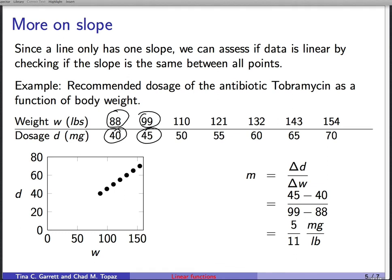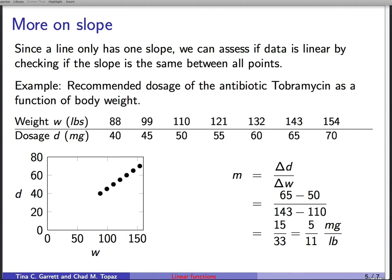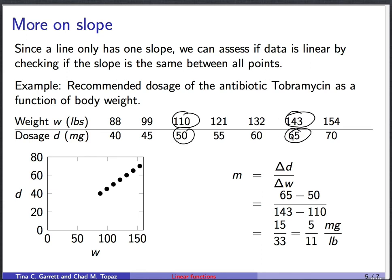Then we could do the same thing for a different pair of points. Say we choose 110 and 143, for which the function has values 50 and 65. So the slope, then, would be 65 minus 50 over 143 minus 110. And that's 15 over 33, or again, 5 elevenths milligrams per pound. That's the same. And you could check various other combinations. For this idealized data, you'll find that the slope between any pair of points is always the same, 5 elevenths milligrams per pound.